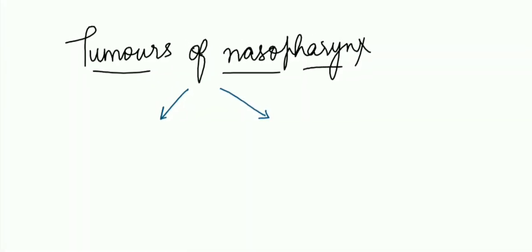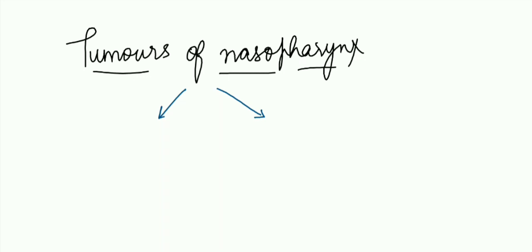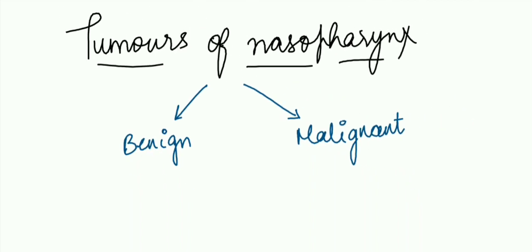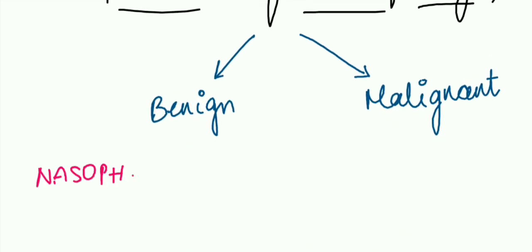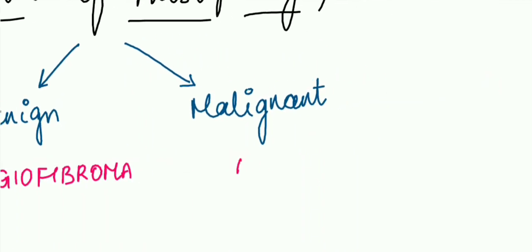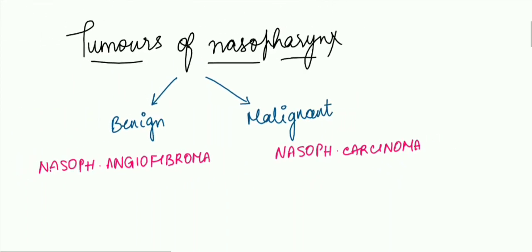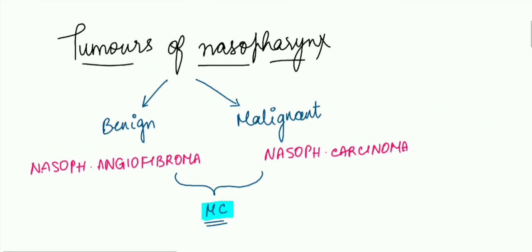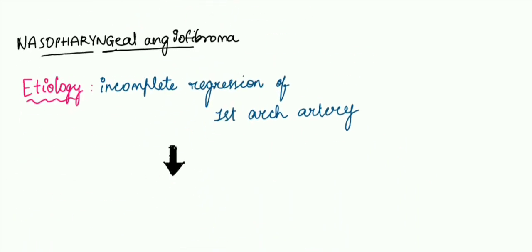Let's start with the tumors of nasopharynx. These are of two types: benign and malignant. The most common type under benign is nasopharyngeal angiofibroma, whereas the most common type under malignant is nasopharyngeal carcinoma.